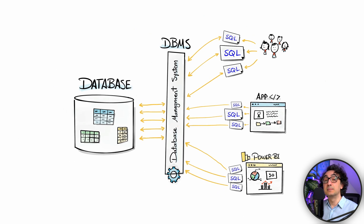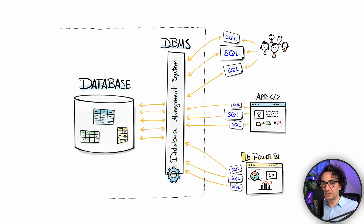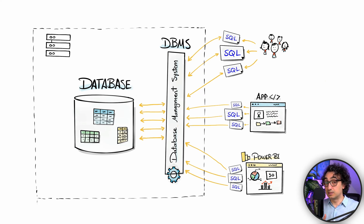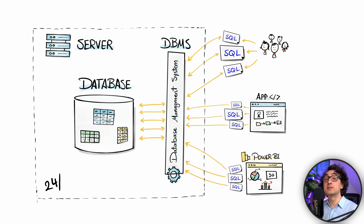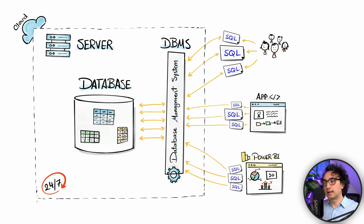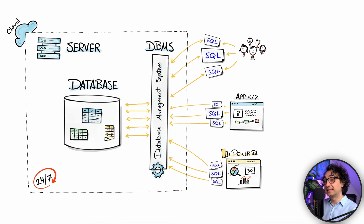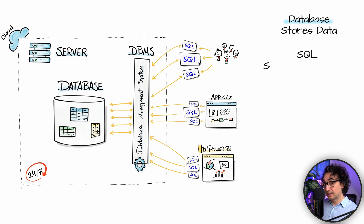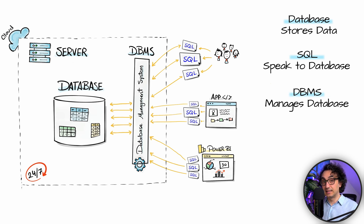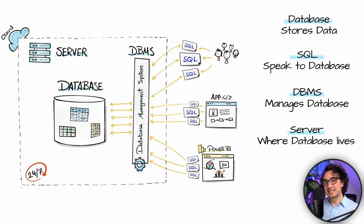The DBMS is the software that manages the database. But we're not done yet — something is missing. We have our data and the software, but what's missing is the hardware. In real companies we cannot run that on a personal PC because a PC is too weak and goes offline. That's why we need a server — a very powerful PC that lives 24/7 and is always available. We can decide whether to have a server inside the company or use cloud services to run our database. So: the database is a container, SQL is the language, DBMS manages the database, and the server is the physical machine where the database lives.